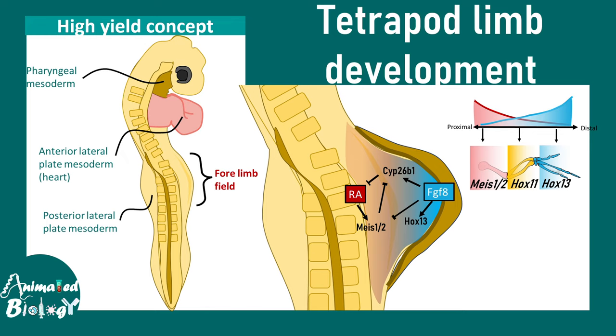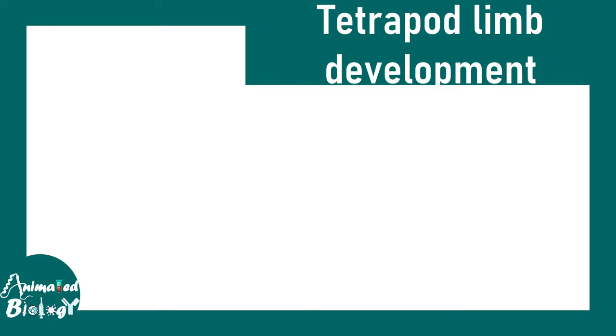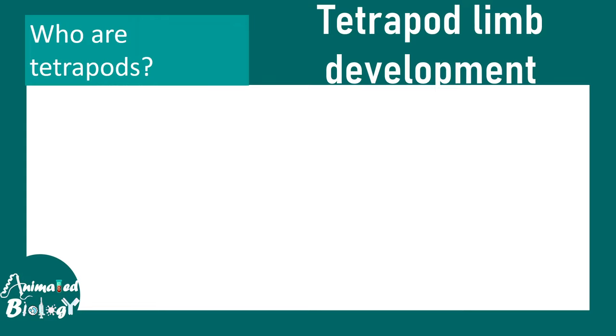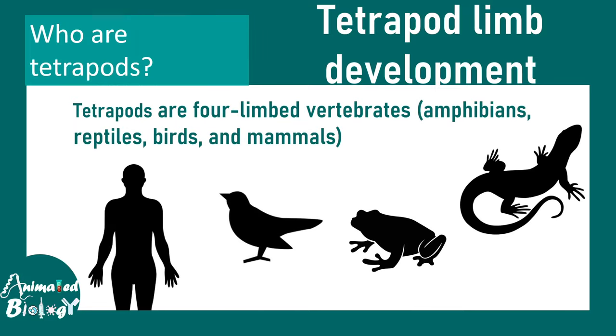So what are tetrapods? Tetrapods are those animals which have four limbs, like mammals, birds, reptiles, etc.